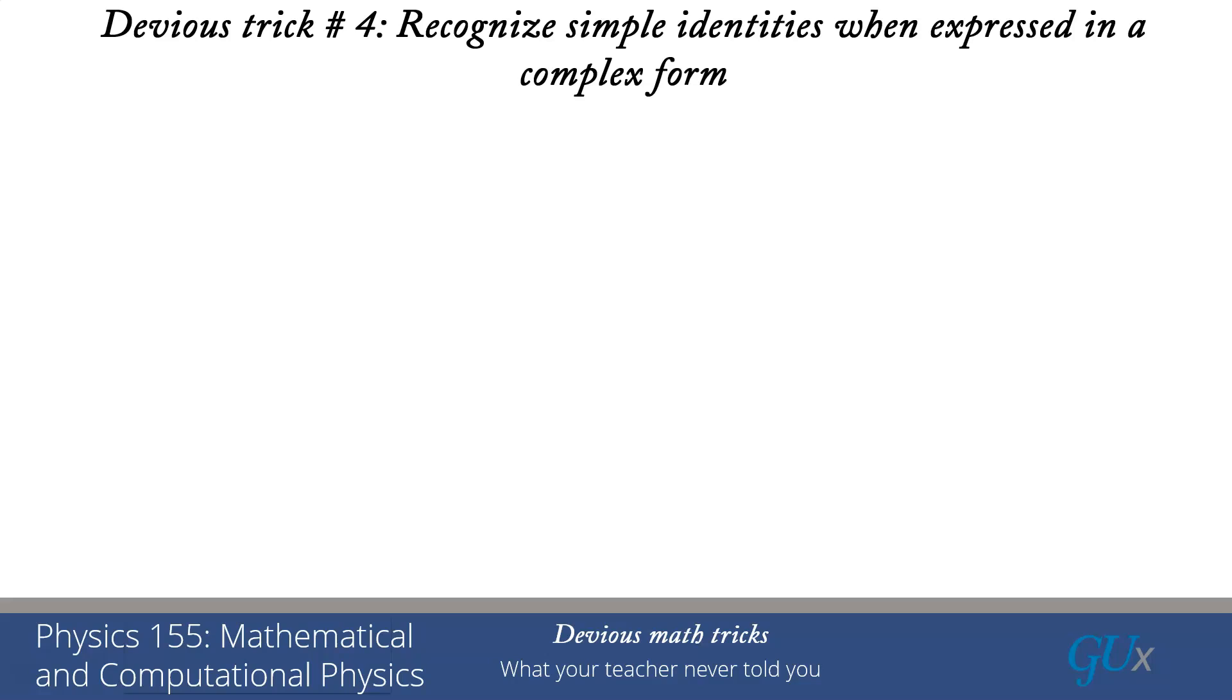Devious trick number four, recognize simple identities when they're expressed in a complex form. This is a really important thing. Sometimes there's a simple identity sitting right in front of you, but you can't recognize it because the form is too complicated. Let's see how to use the identity we worked out earlier. x² - 25 = (x+5)(x-5). We're going to use it to simplify (sin²θ - 25)/cos²θ.